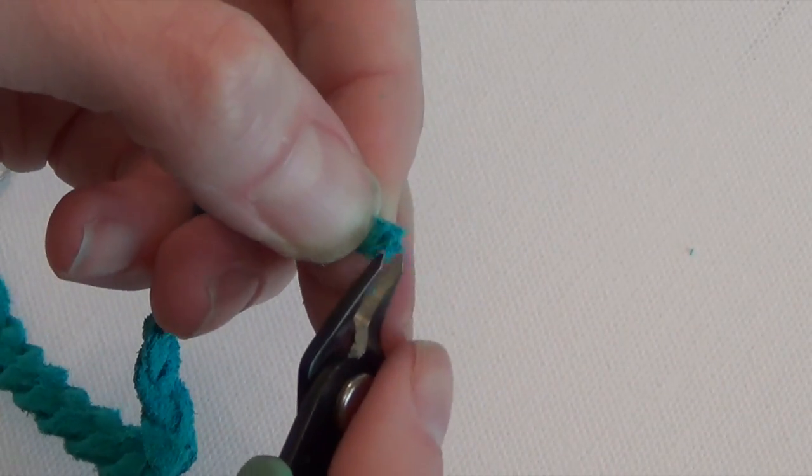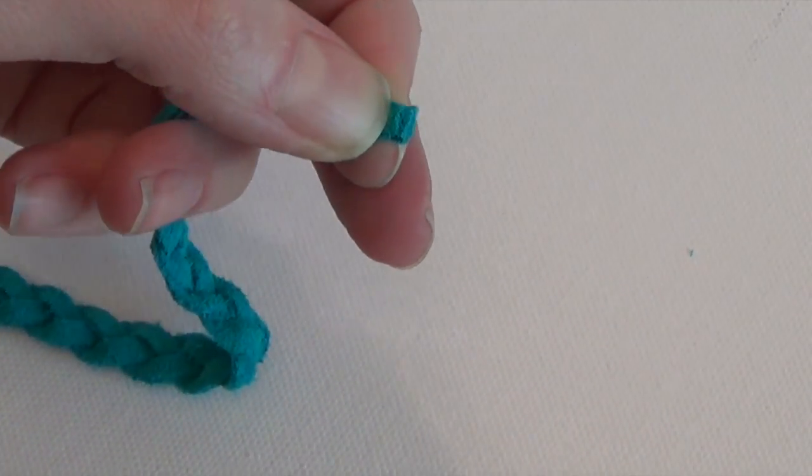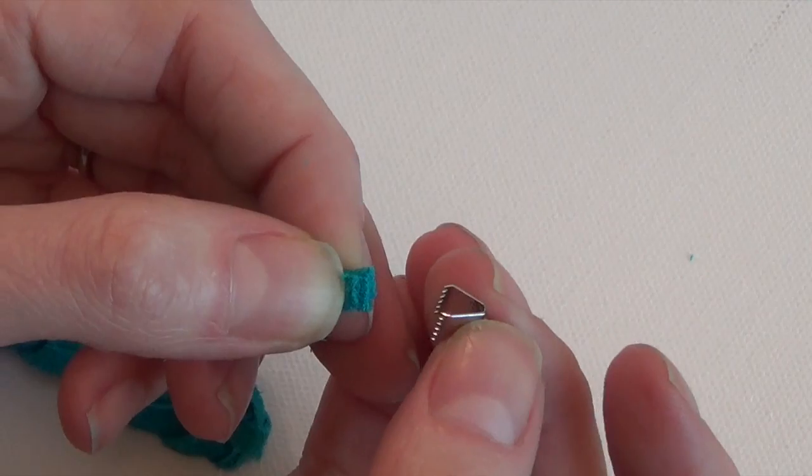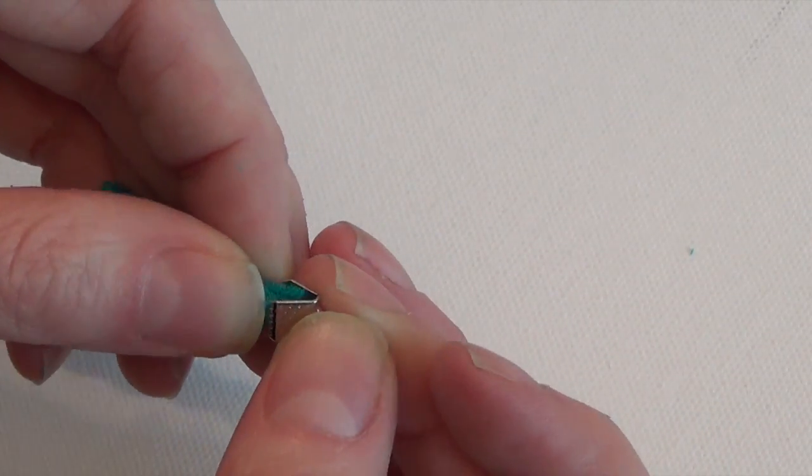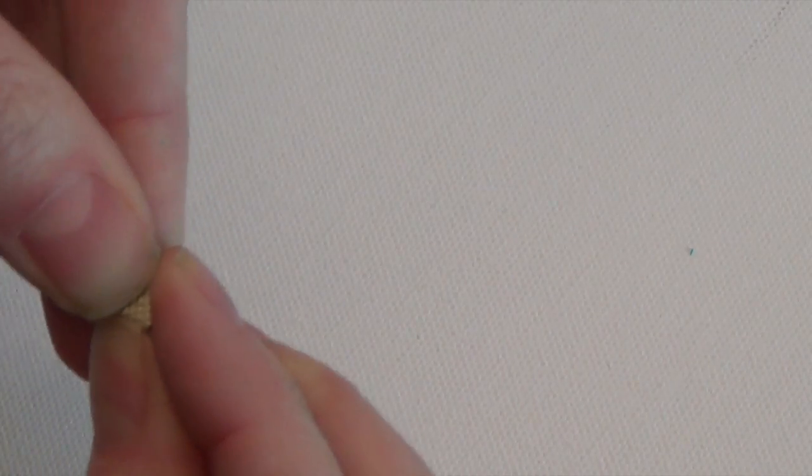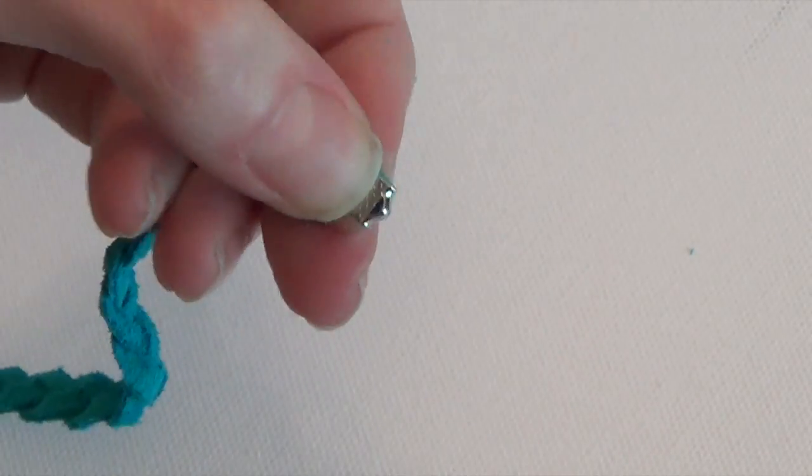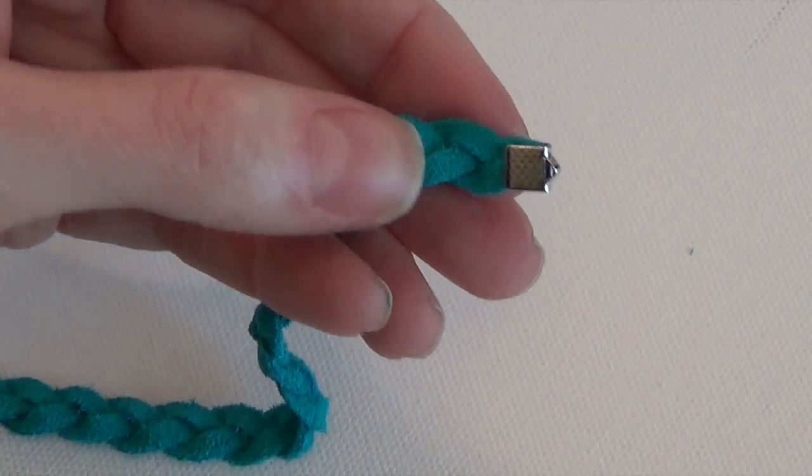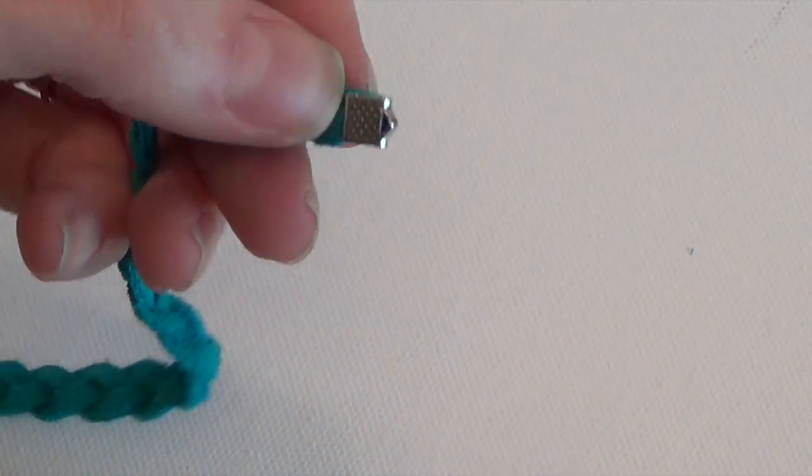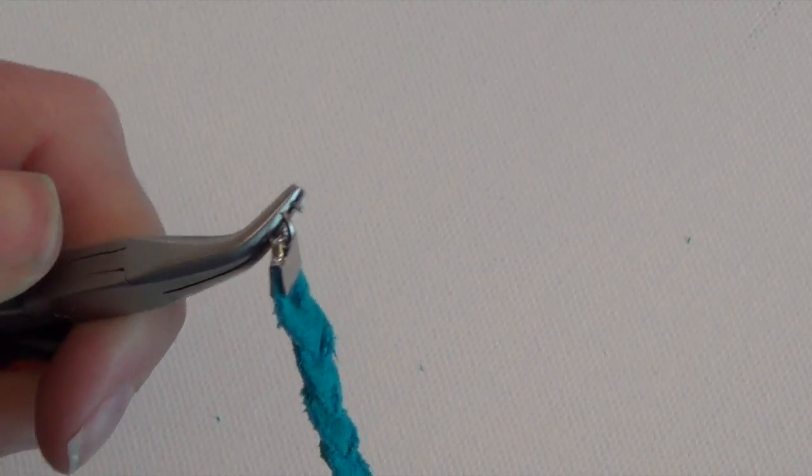And we're going to do the same thing as we did on the other end. Make sure that your ends are overlapped and if they're uneven, go ahead and trim any excess off so they're all in line. Slide the ends into the crimp and squeeze it with your fingers, crimp it with your pliers, and then attach another jump ring.